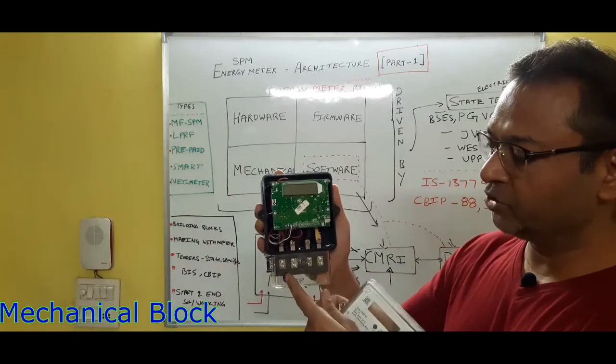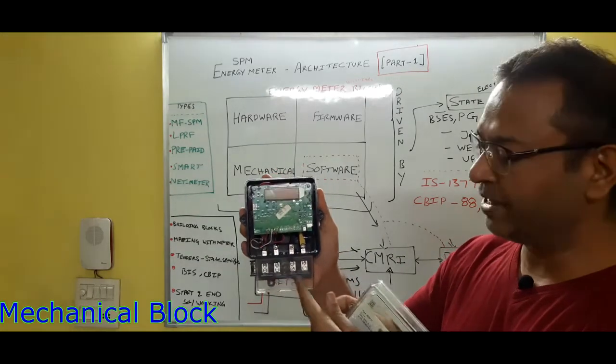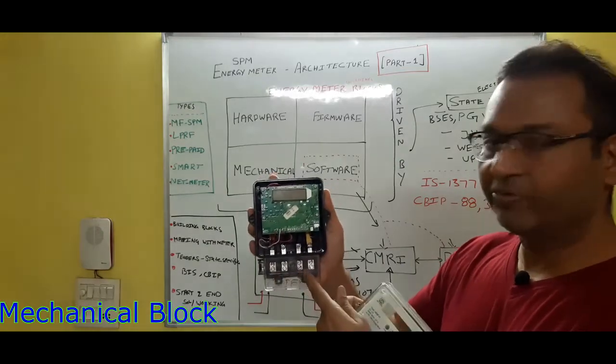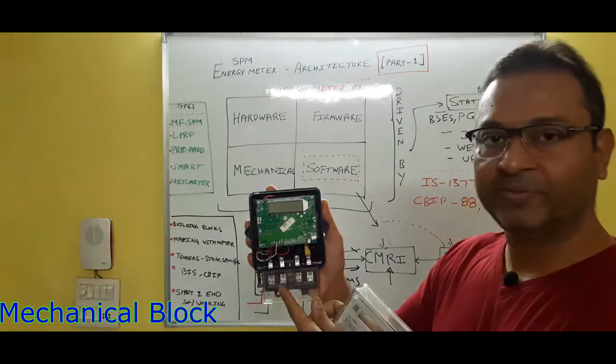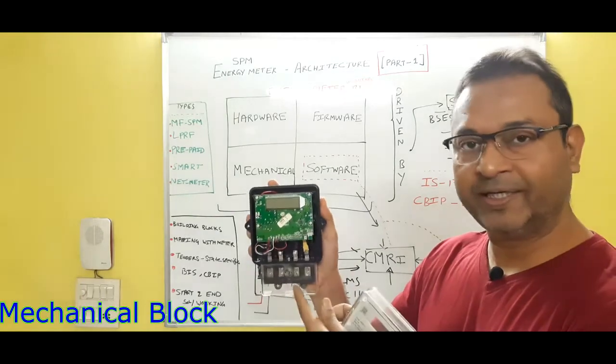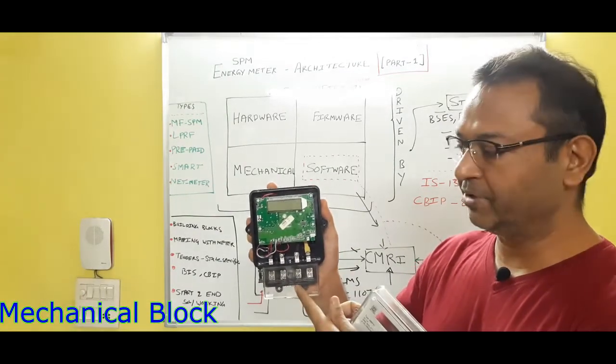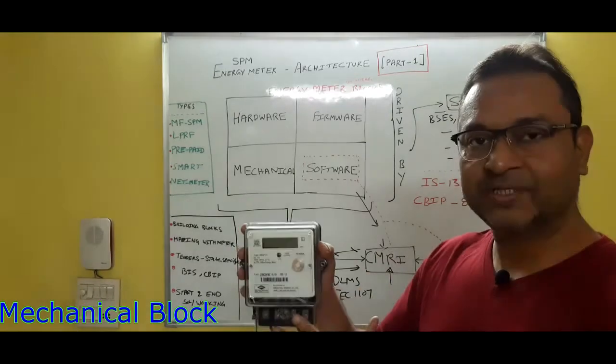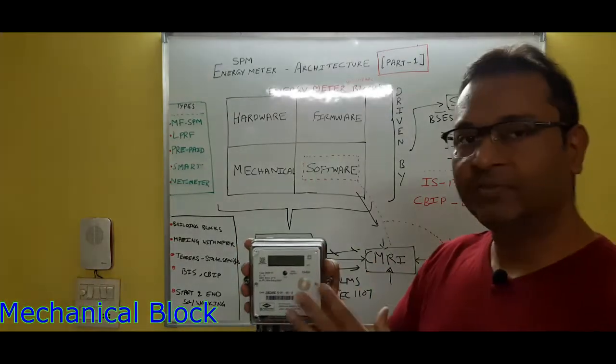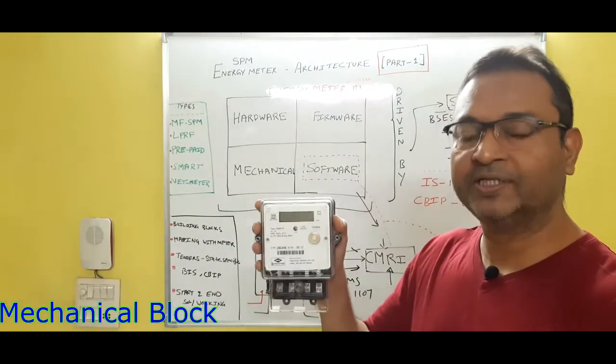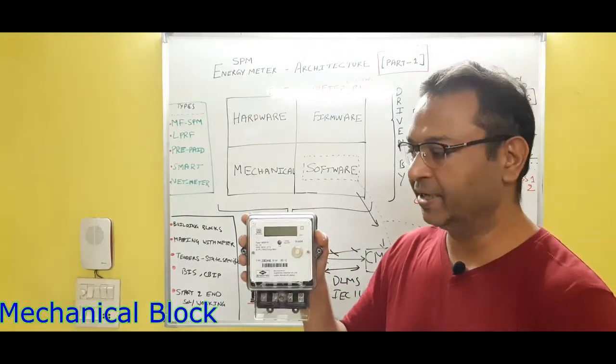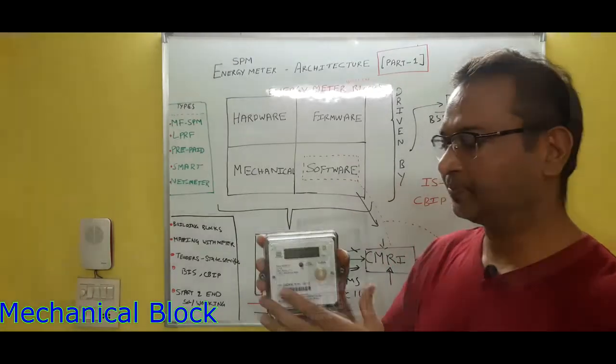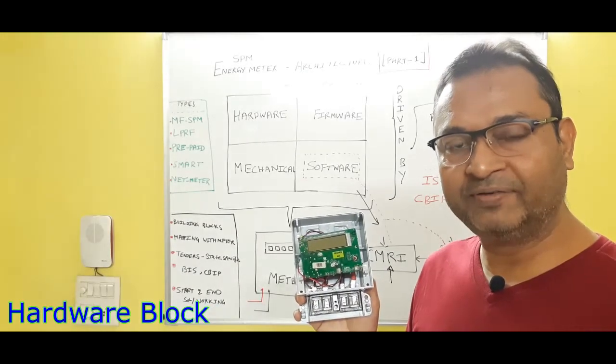The size of the block depends on the type of meter, whether it is 5 to 30 amperes meters or 10 to 60 amperes meters. These are the some major plastic parts which come under your mechanical. And apart from this an external enclosure is also there to cover the meter. Let's talk about its hardware section.